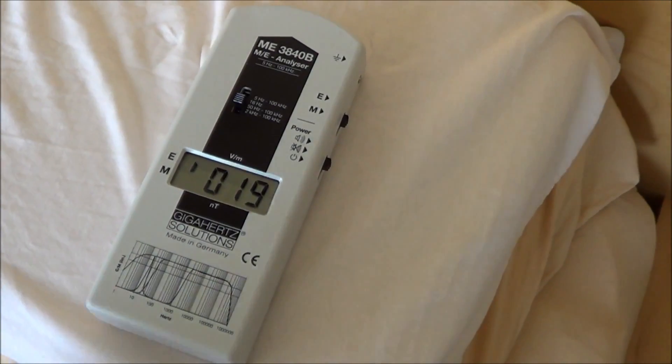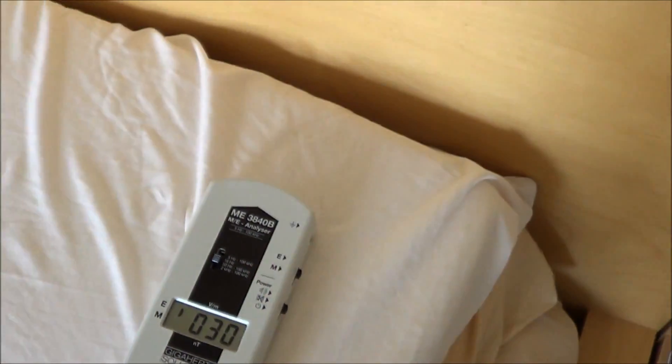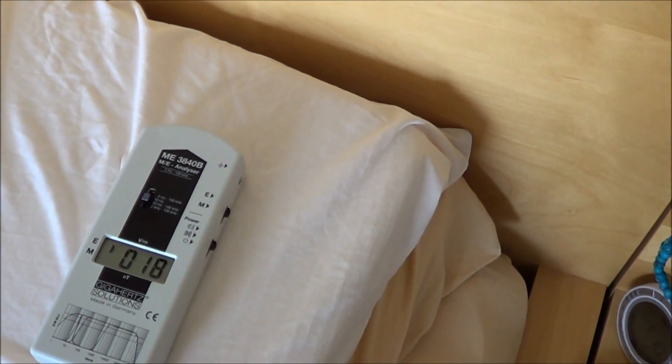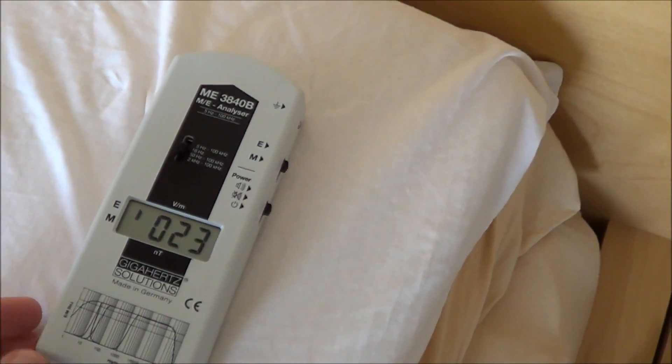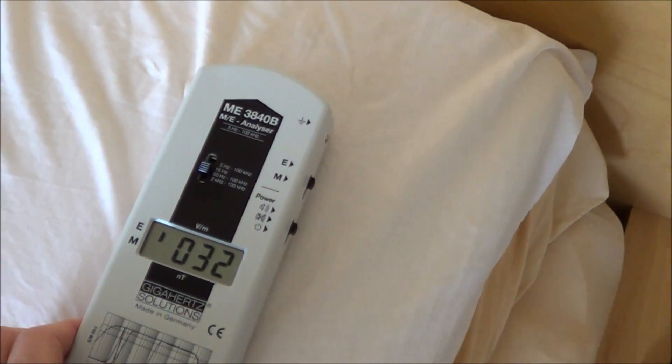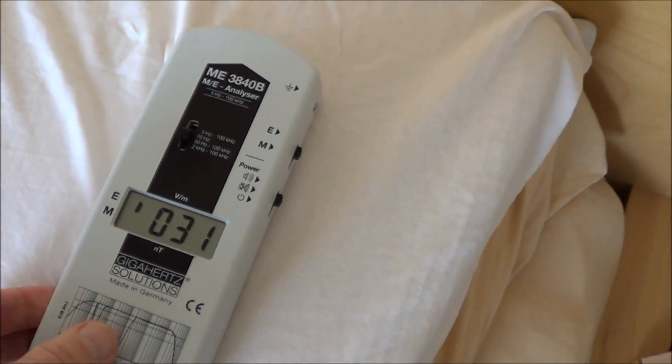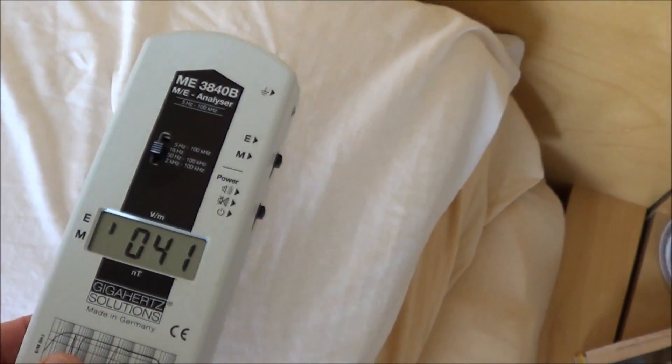Here's another bedroom in the house. And as you can see, this bed is not moved away from the wall. Alright, the meter is about 12 inches from the wall on the other side of the headboard. And a person's head would still be in 31 volts per meter of an electrical field.